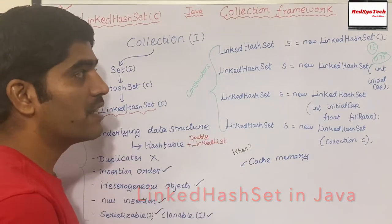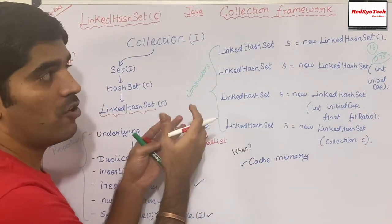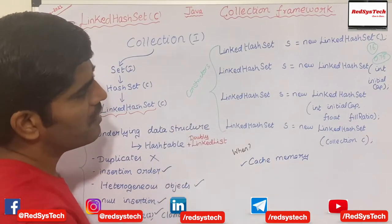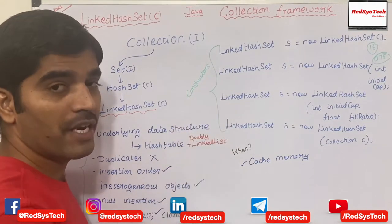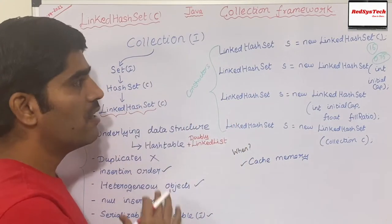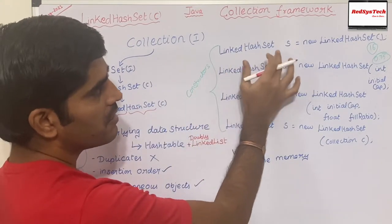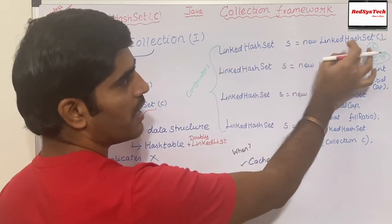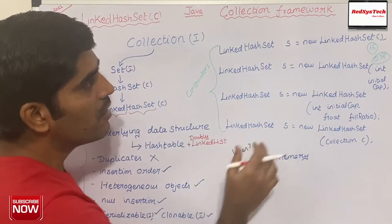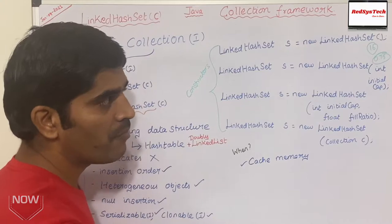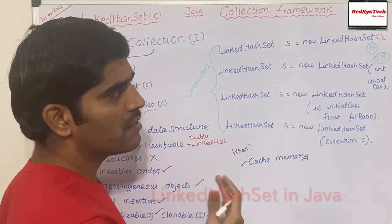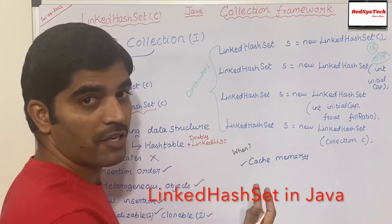Now let's see the ways you can create a LinkedHashSet object using constructors. Oracle defines four ways. If you write LinkedHashSet lhs = new LinkedHashSet(), it creates a LinkedHashSet object with a default initial capacity of 16 and a fill ratio of 0.75. So what is that initial capacity and what is the 0.75 fill ratio? Let me explain for a quicker understanding.